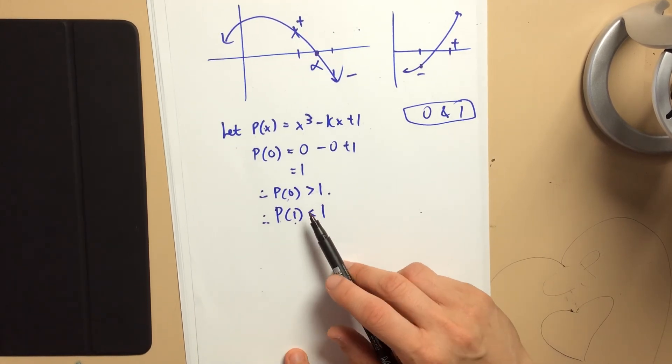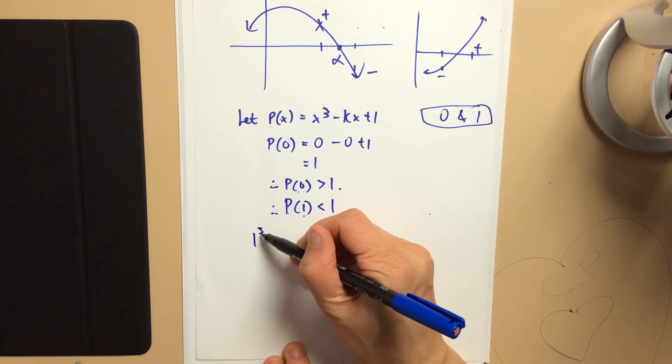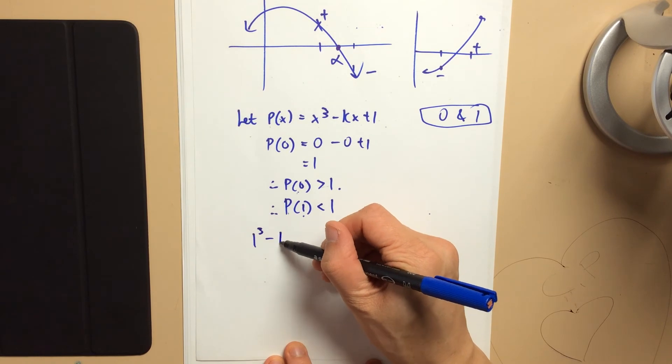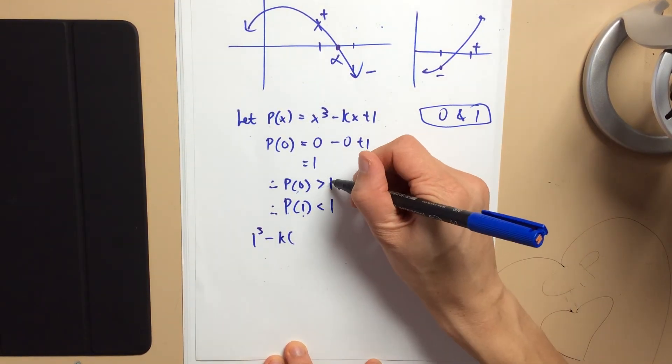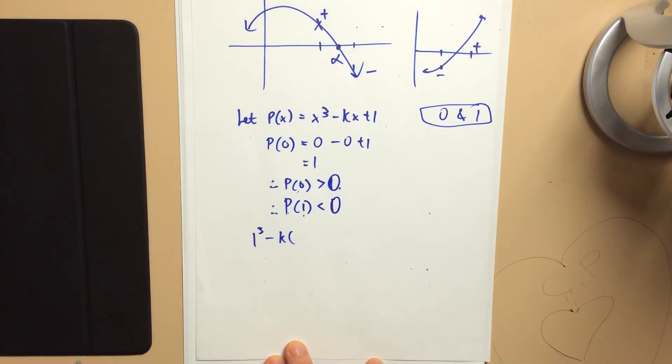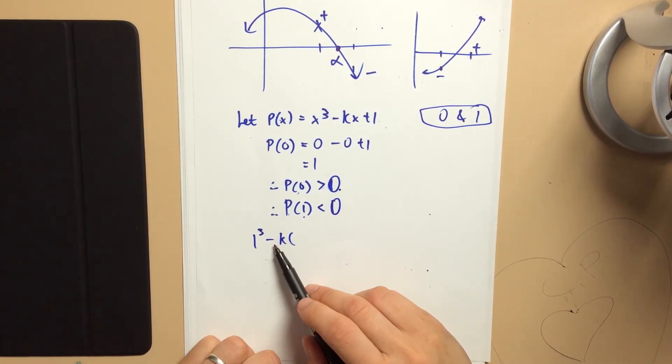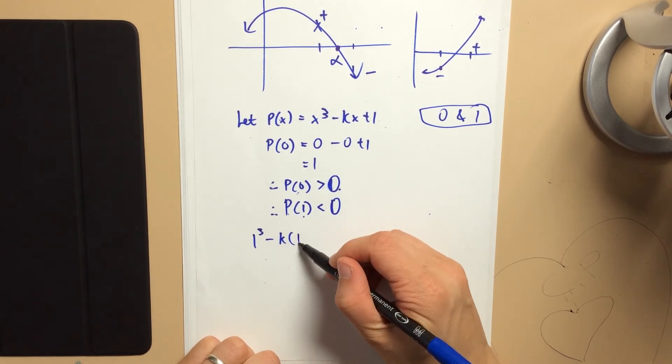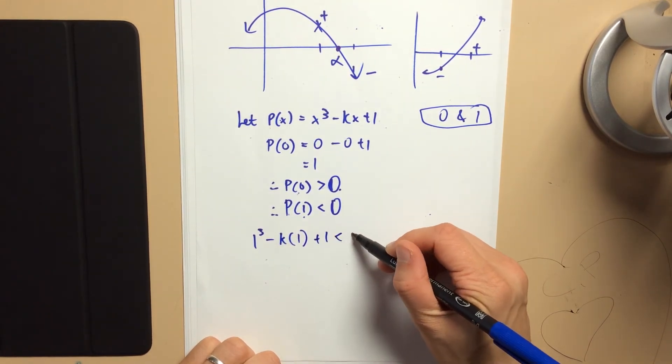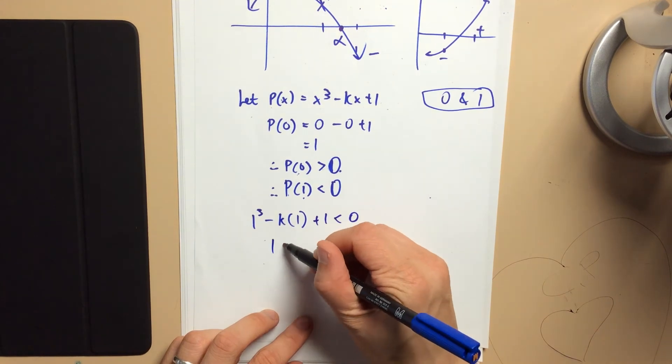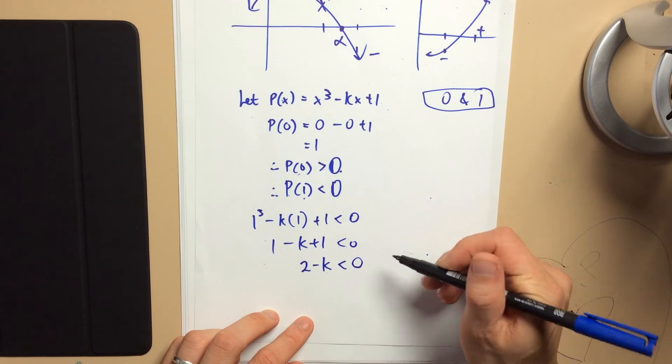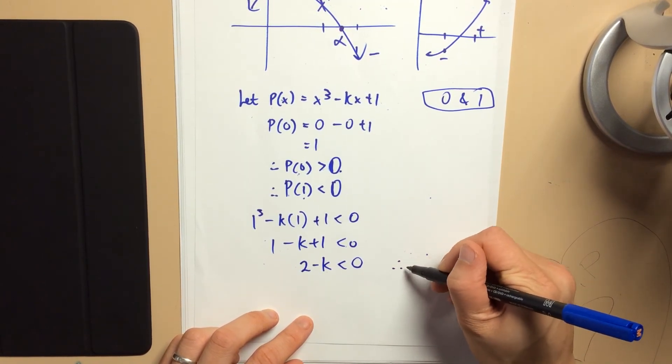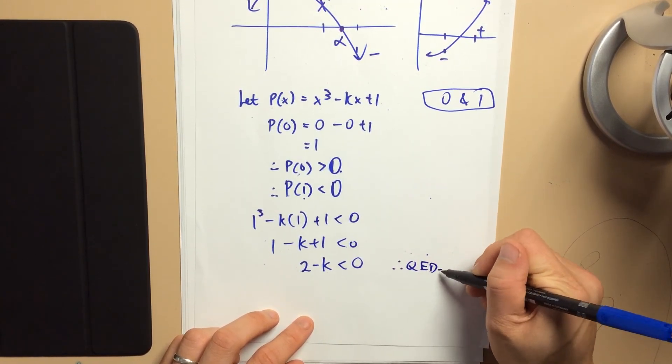So I can say, well, p of 1 will be less than 0. What is p of 1? It's 1 cubed minus k lots of, sorry, let's just come back a little bit. So that's greater than 0, or less than 0. I'll come back to this. 1 cubed minus k lots of 1 plus 1, that's less than 0, it's negative. So that's 1 minus k plus 1, which is less than 0. And that's the 2 minus k being negative that we were required to prove.